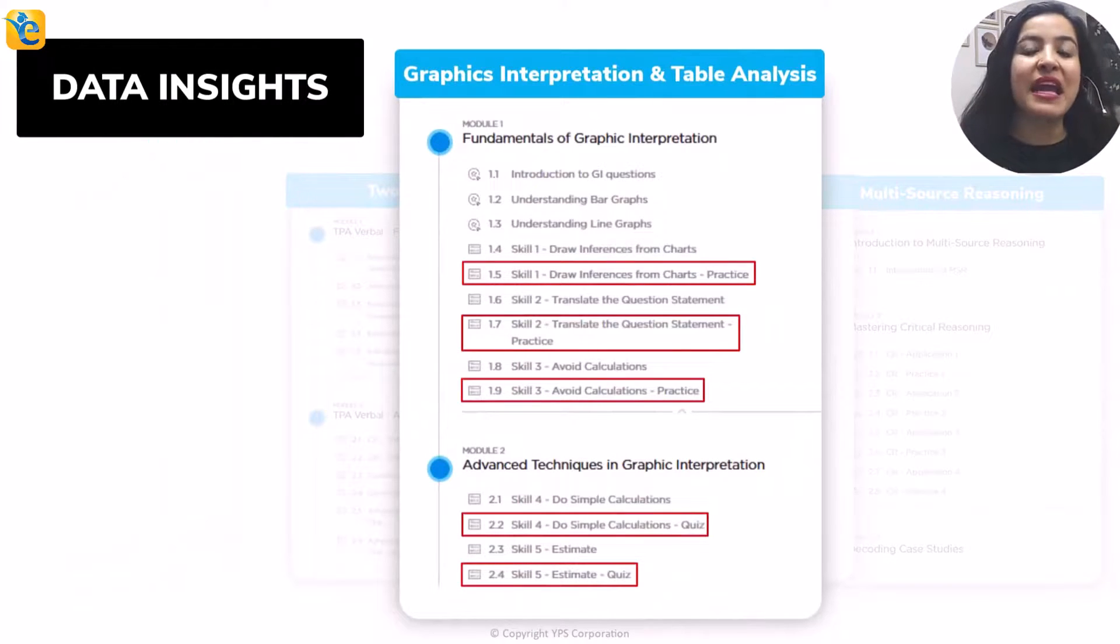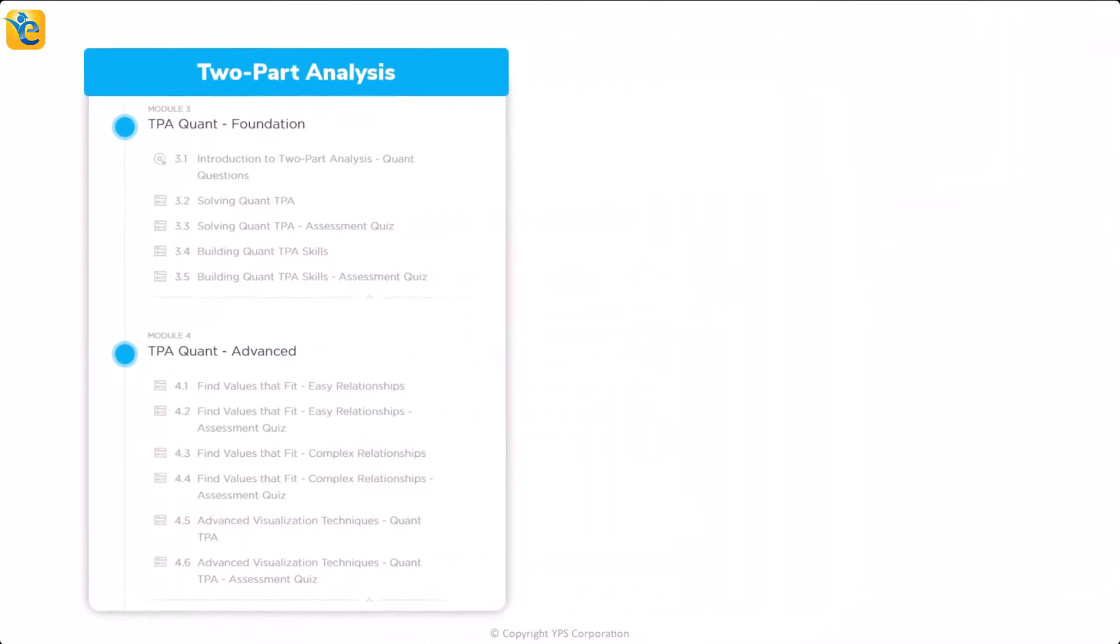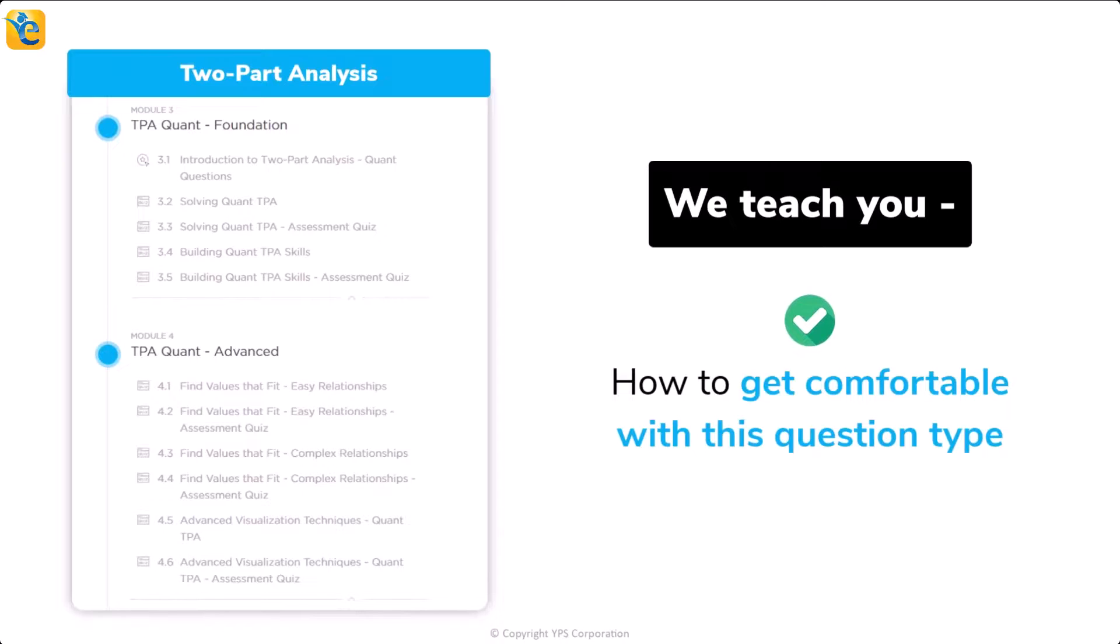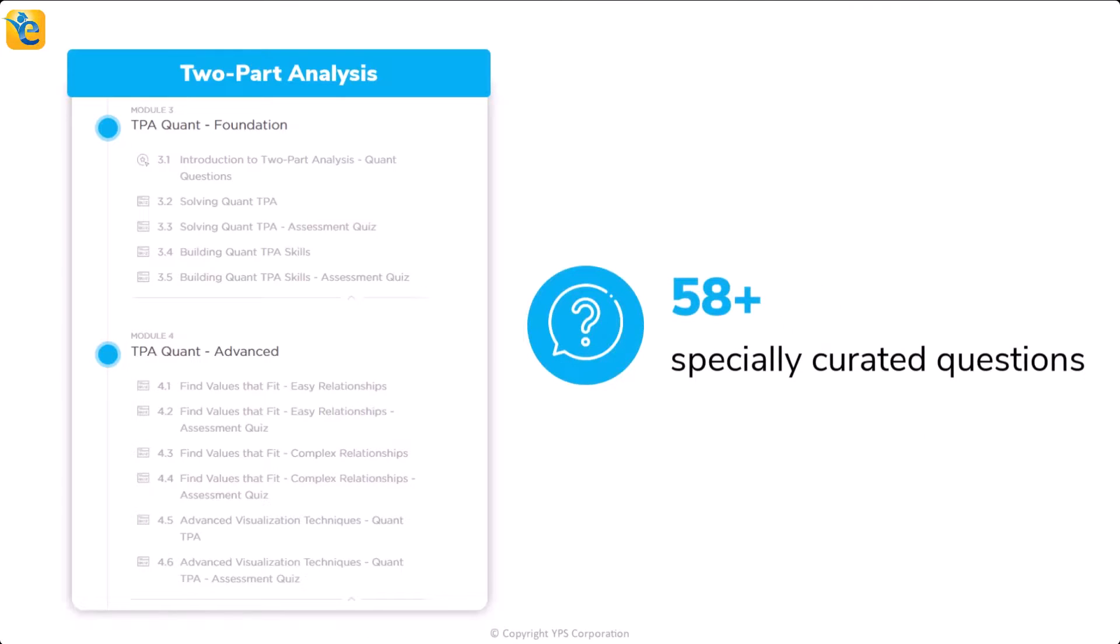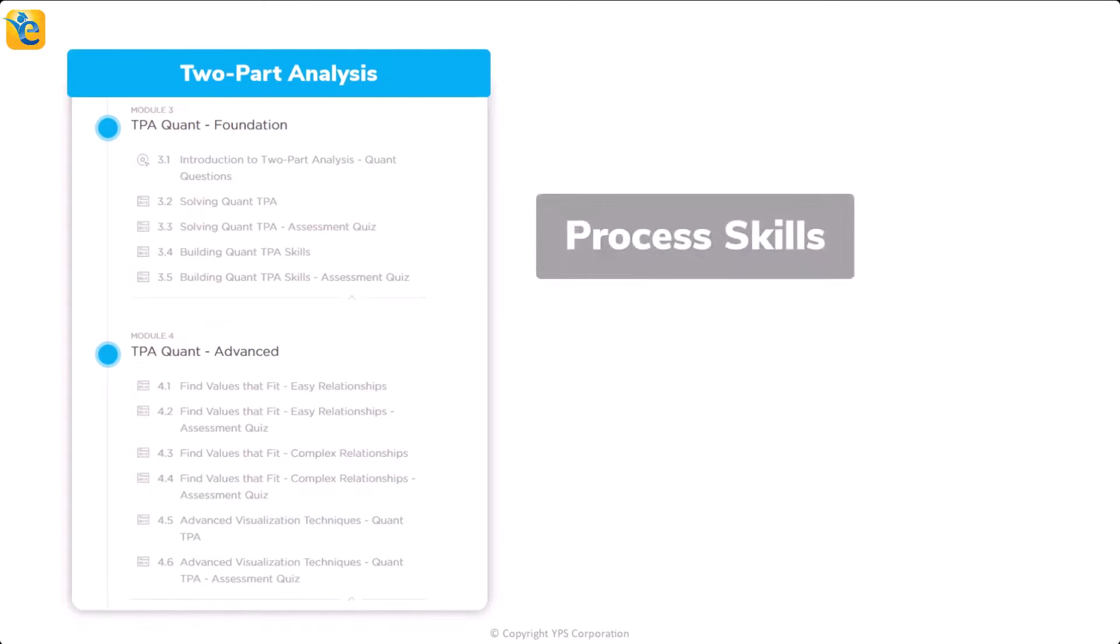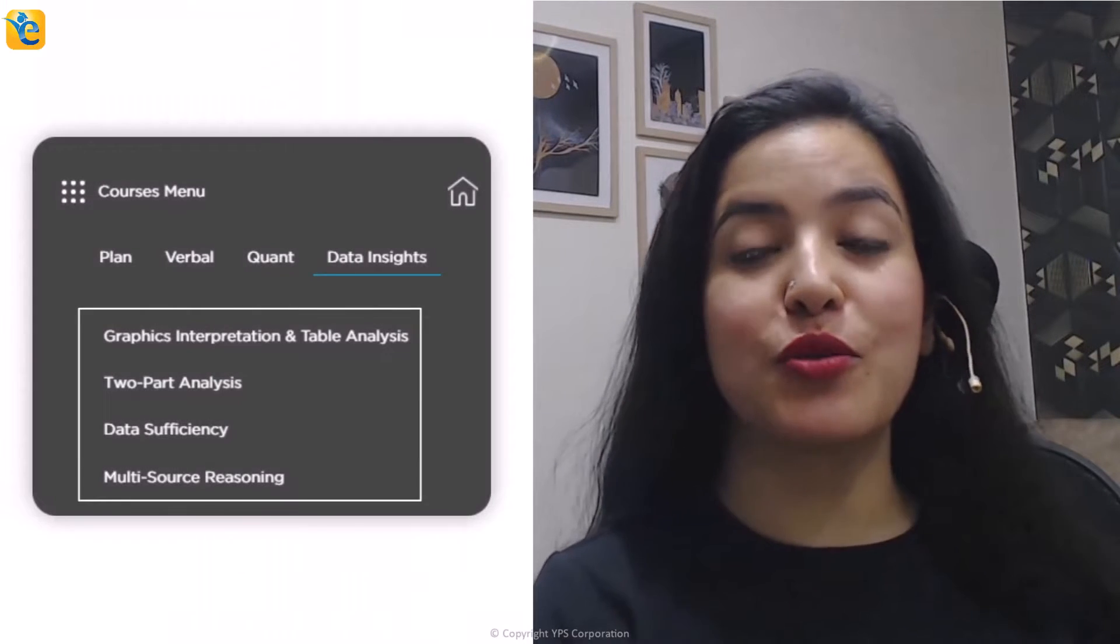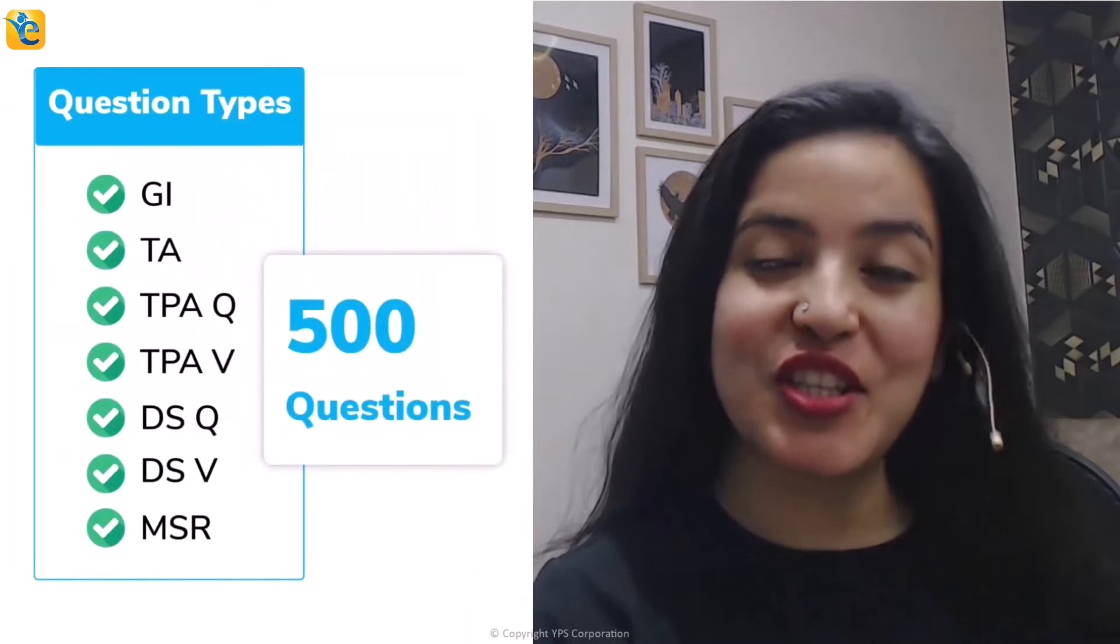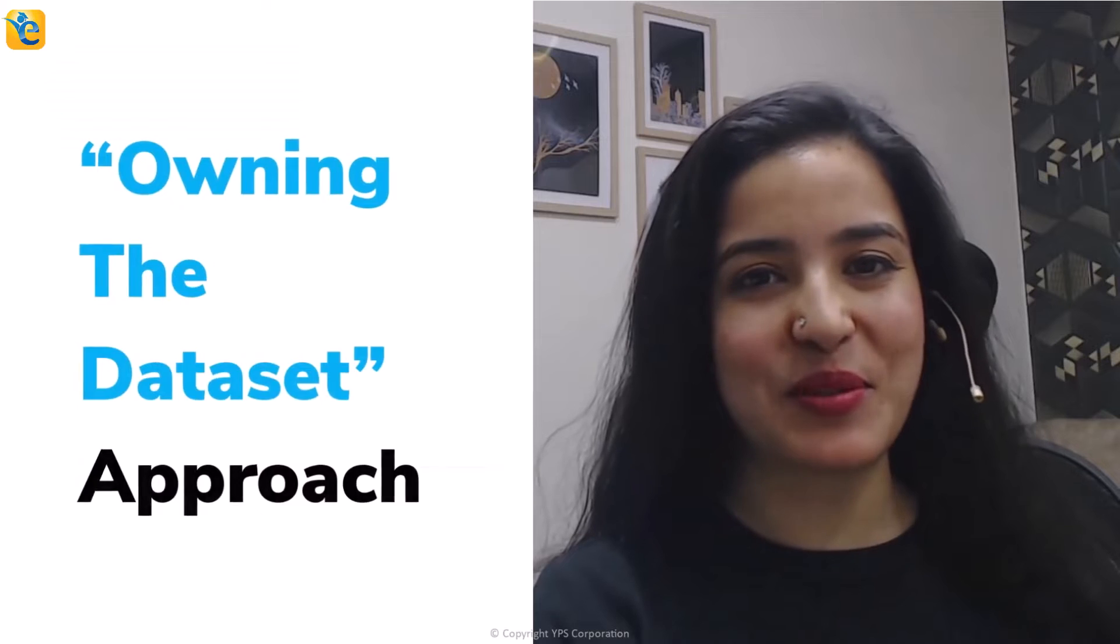And we reinforce the same in every practice quiz. In fact, in the TPA Quant modules in the two-part analysis course, we teach you how to get comfortable with this question type. You will gain the confidence to handle any question of this type in the most efficient manner. We serve more than 58 specially curated questions at the right progression so that you can learn various aspects of this question type, including the process skills of inference, translate, and visualize. Thus, throughout the DI course, through around 500 questions, you will learn such process skills so that you can also comfortably use the owning the data set approach.